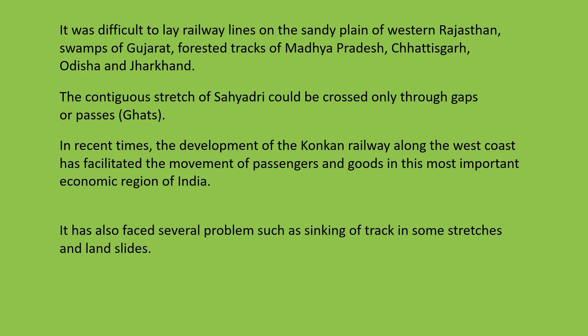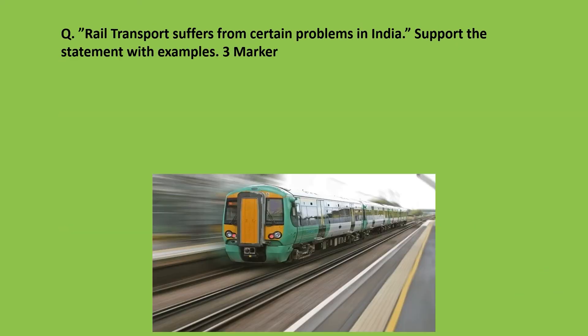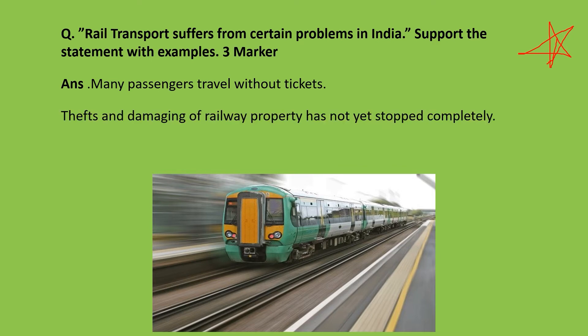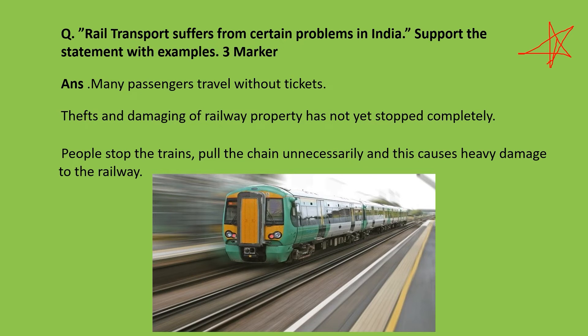Konkan Railway has also faced problems such as sinking of track in some stretches and landslides. Rail transport suffers from certain problems in India — very important three markers: many passengers travel without tickets; damage to railway property has not yet stopped completely; and people pull the chain unnecessarily, causing heavy damage to the railway.